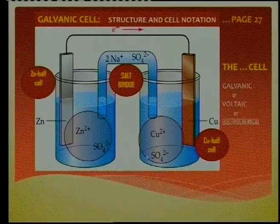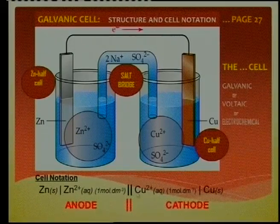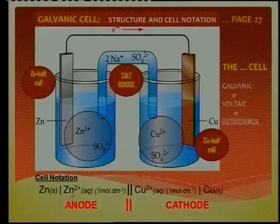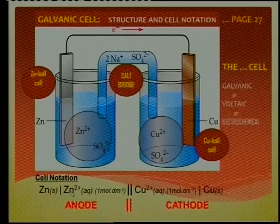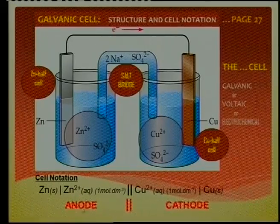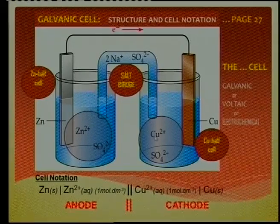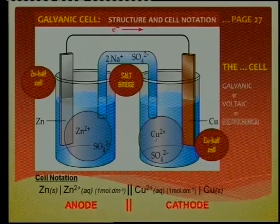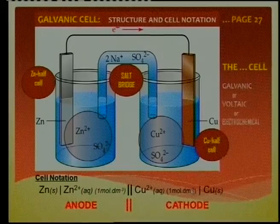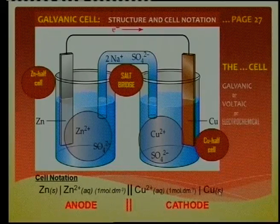Here's another question: do you recognize this cell notation? Zinc is separated from zinc ions — or zinc sulfate — by a phase boundary. There is a salt bridge between the two. On the other side, we get copper ions in solution from copper sulfate. That is the concentration, and that is separated from the copper electrode on that side, which is a solid.